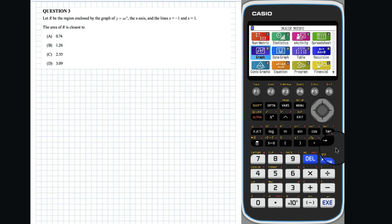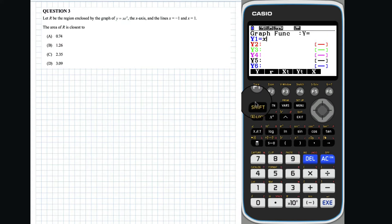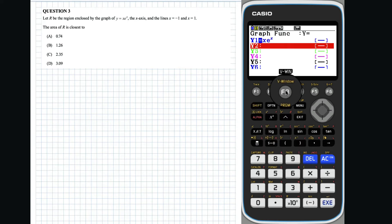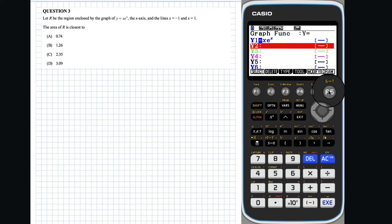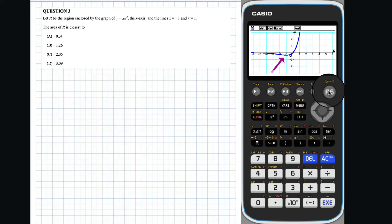Question 3: First, let's draw a graph of y equals x e to the x. Given that the question asks us to find the area between x equals negative 1 and 1, we will use the initial view window. We can see that some of the required area is below the x-axis and some is above the x-axis. We can calculate the area of such a region using the mixed integral option on this calculator.